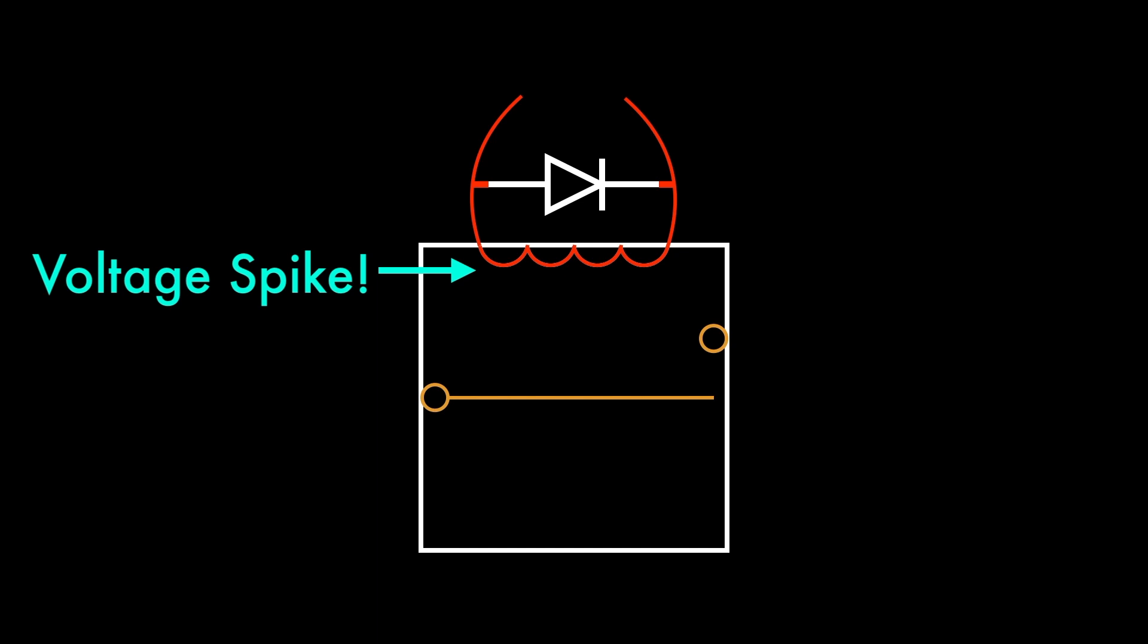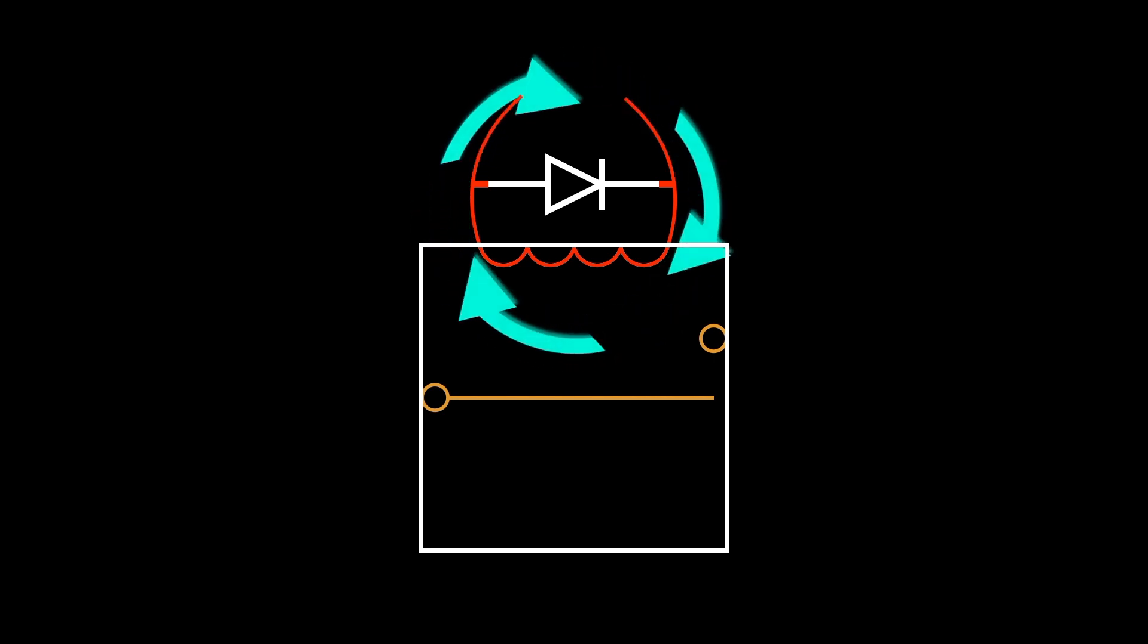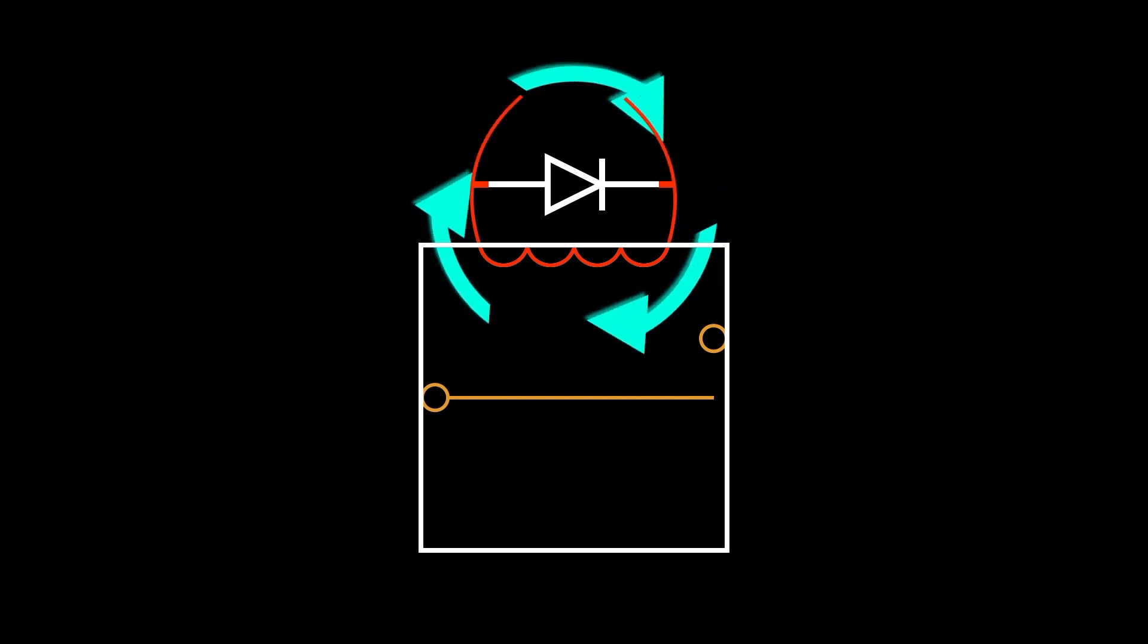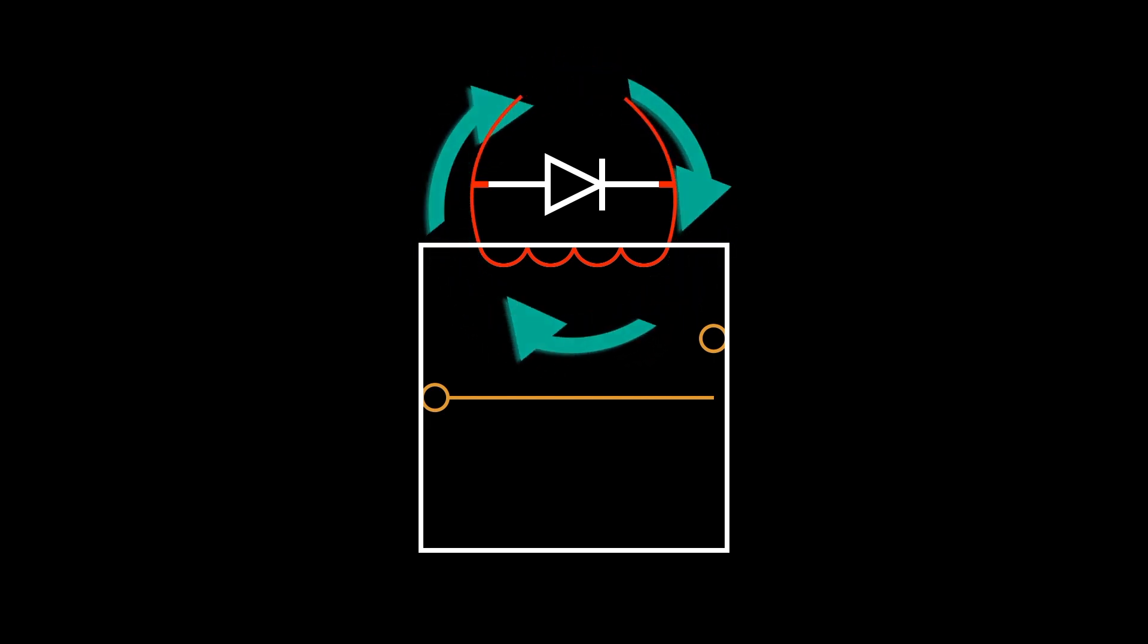The voltage spike causes current to flow through the diode to the only place it can go, back into the coil. In fact, the flyback current will flow in circles from the diode to the coil and back again, until all of its energy is dissipated by resistance.